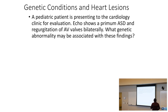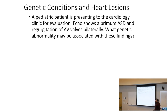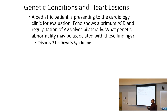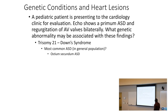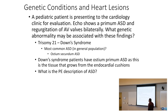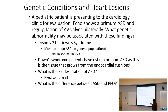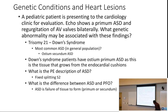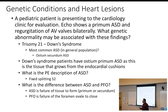A pediatric patient presents to the cardiology clinic for evaluation. Echo shows a primum ASD and regurgitation of the AV valves bilaterally. What genetic abnormality may this be related to? Trisomy 21. This is going to be the AV canal defect — atrioventricular canal defect. The most common ASD in the general population is secundum, whereas Down syndrome presents with ostium primum. The physical exam finding of ASD is a fixed split S2. The difference between ASD and PFO: ASD is a failure of the tissue to form, whereas PFO is the failure of the foramen ovale to close.